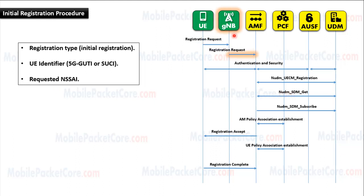Then the gNodeB selects the AMF that should serve this UE, and then the gNodeB sends the registration request message to the AMF.